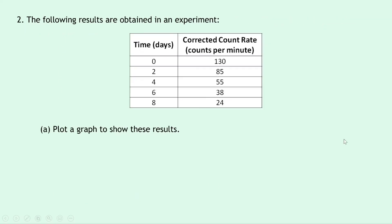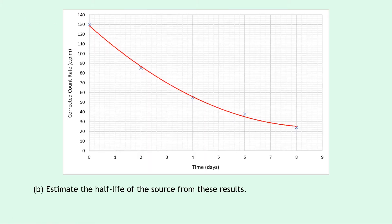Question 2 says that the following results are obtained in an experiment. We have time in days and corrected count rate in counts per minute. Remember, corrected count rate is just the same as the activity of the source. Part A says to plot a graph to show these results. You should have corrected count rate on the y-axis with units of counts per minute — CPM for short.